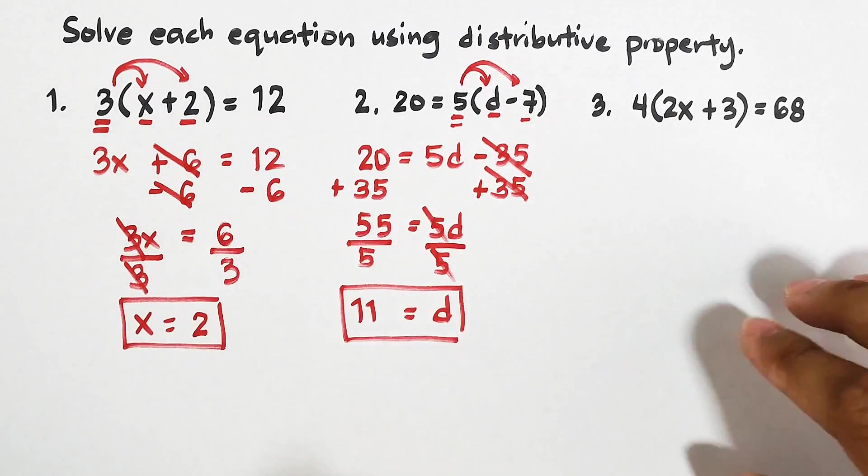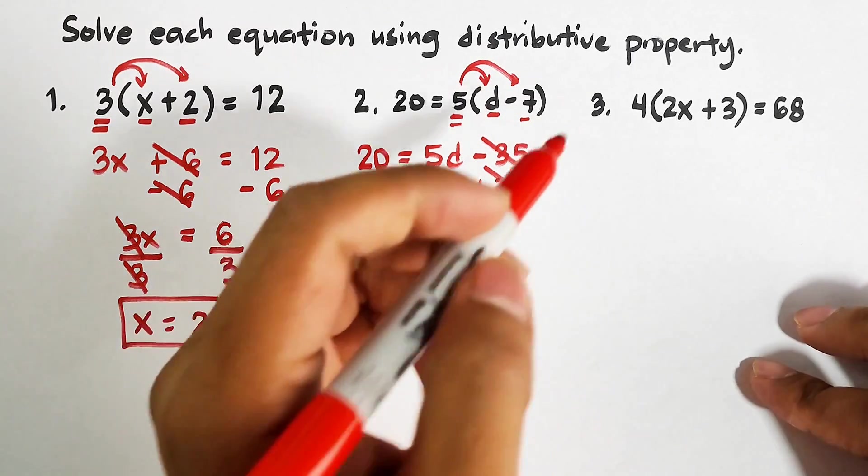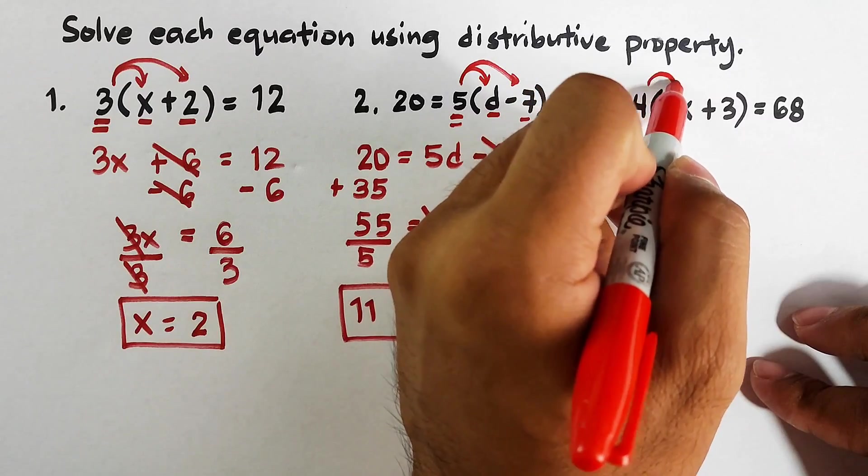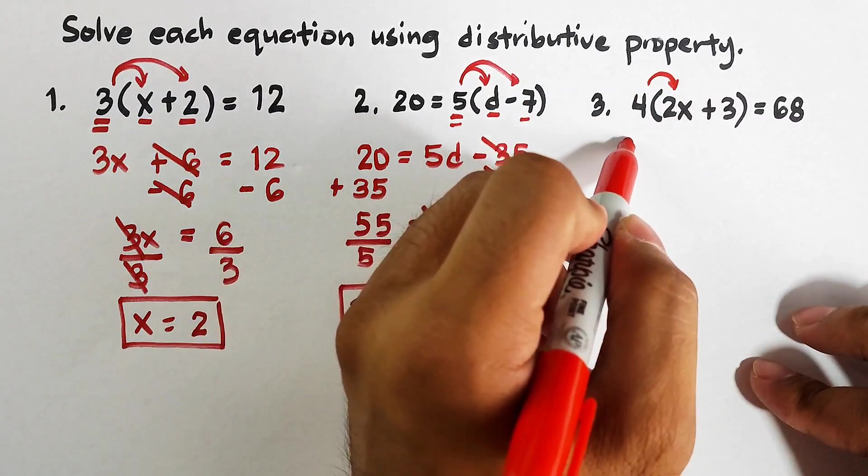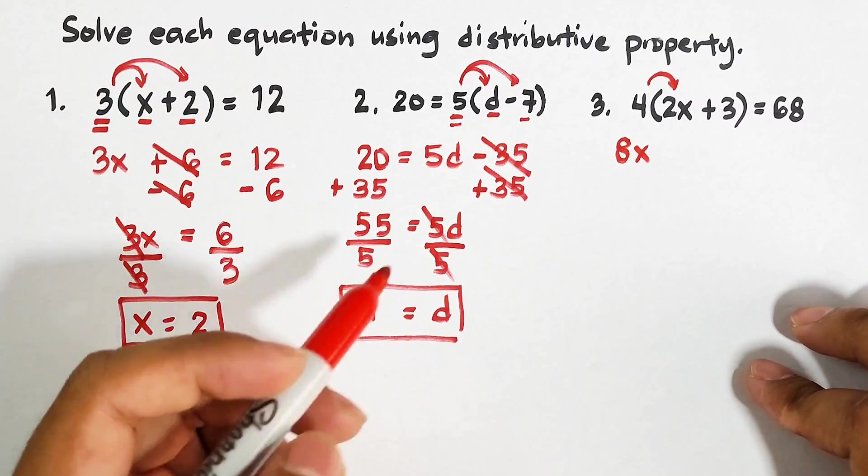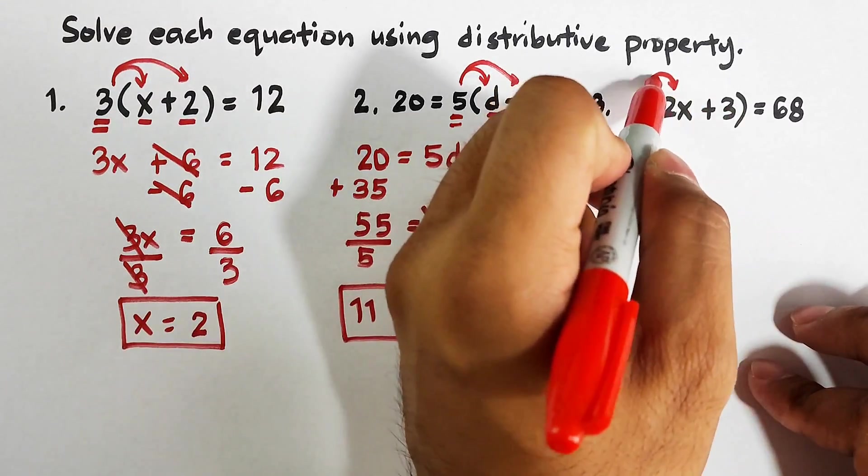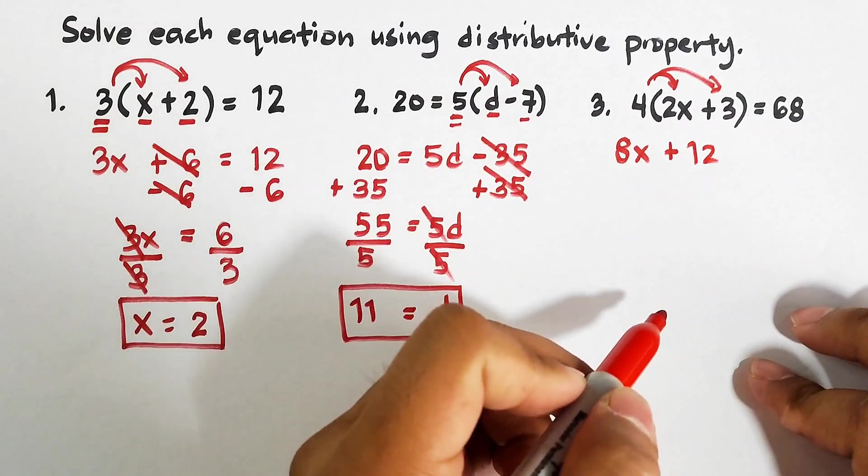So we have 4(2x+3)=68. Now by distributive property, let's multiply: 4 times 2x, 4 times 2 is 8, then copy x. Then 4 times 3, that would be plus 12, or positive 12. On the other side, this is 68.